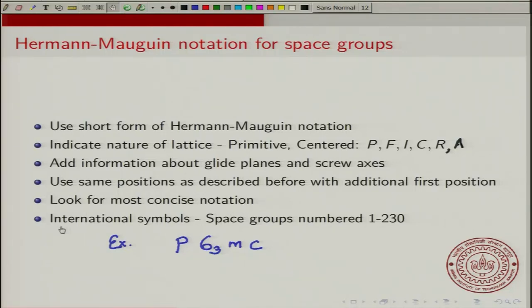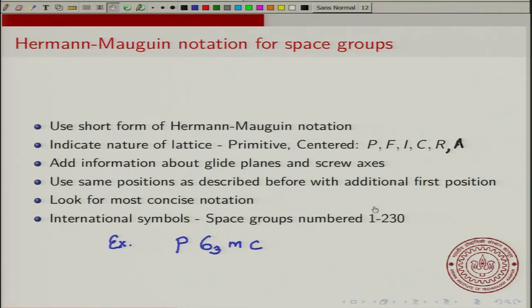These are also called international symbols, and the space groups are numbered 1 to 230. There are 230 space groups for all crystals and these are numbered 1 to 230. I would not be discussing all 230 groups, but I will try to give you a feel for some of these numbers, so that when you see them while reading other books or reading about different crystals, you are not completely unaware.